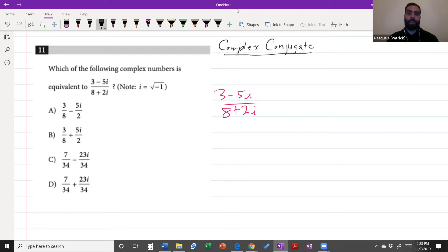What you need to do is multiply by the complex conjugate, so it will be in this instance 8 minus 2i. The conjugate is where you're taking the same value and just flipping the sign in the middle.